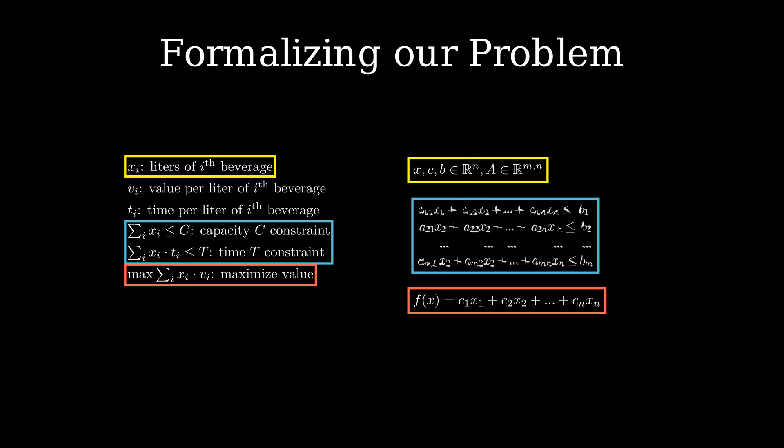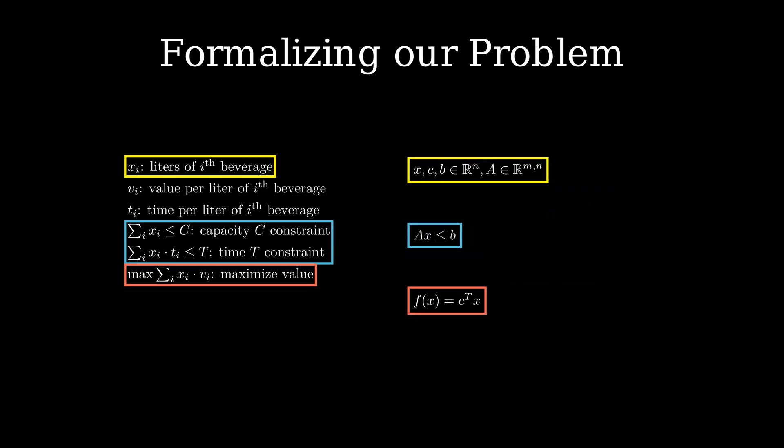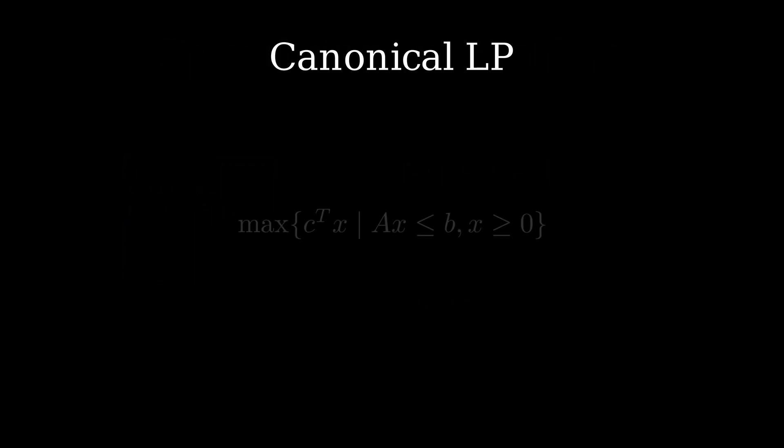Using a bit of linear algebra we can simplify the notation a bit further. From now on when we refer to a linear program we will refer to the following shorthand notation. The vector x is our solution, the matrix A together with the vector b specify the constraints and the vector c defines the objective. Usually, we require the variables of x to be non-negative. We call this the canonical form.